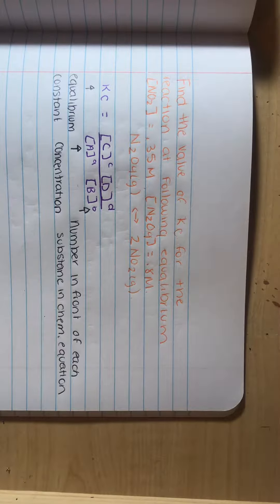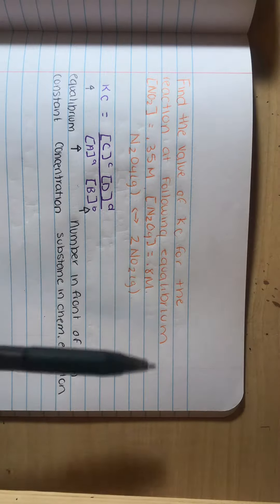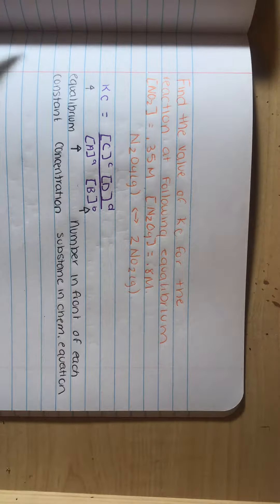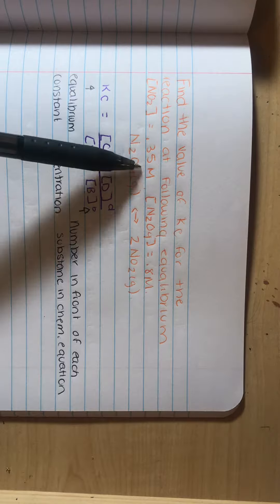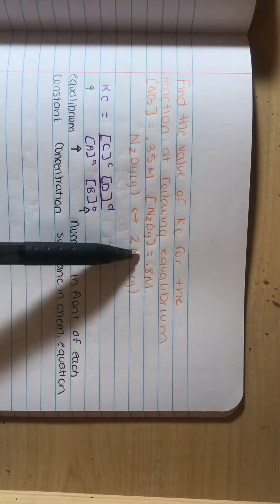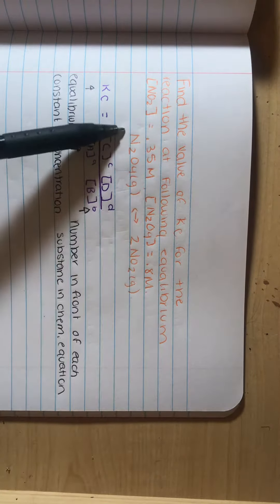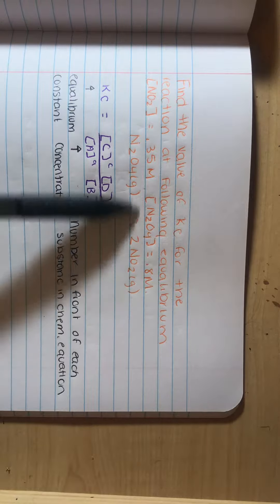Okay, this is also one of the homework questions. It states, find the value of Kc for the reaction at the following equilibrium. It gives the concentration of NO2, which is 0.35, the concentration of N2O4, which is 0.8, and it also gives us the reaction down here.